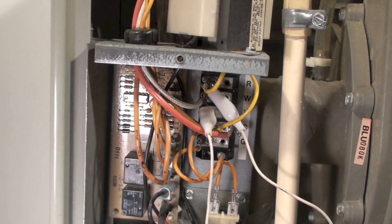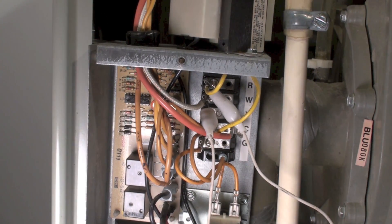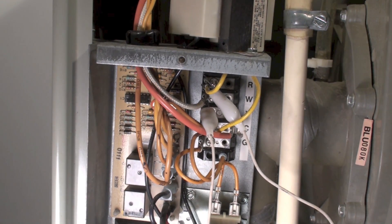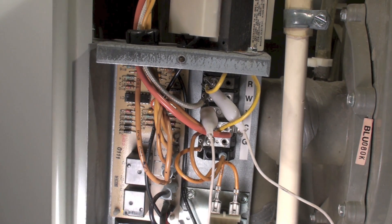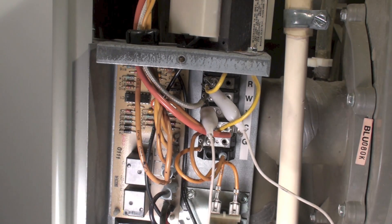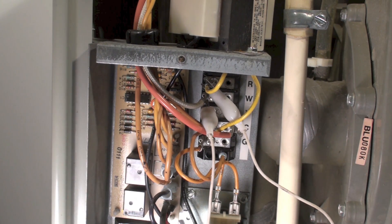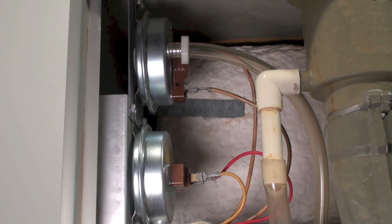It usually ends up being 10 or 15 seconds, as you saw it happen, and it goes to low fire. What's happening there is if the pressure does not drop to the point where that pressure switch is satisfied, then it doesn't go to low speed. That's kind of its way of adjusting for the vent length.